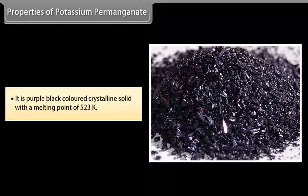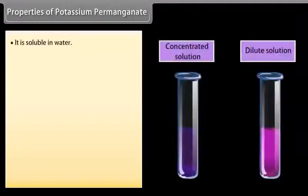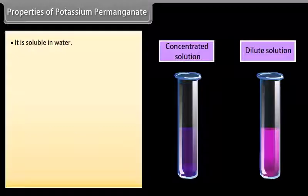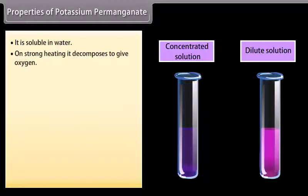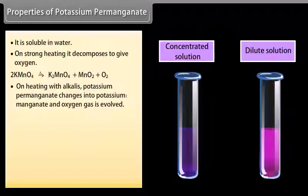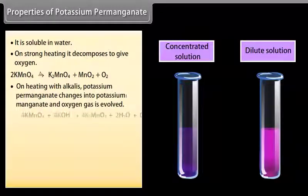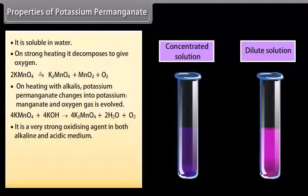Potassium permanganate is a purple-black colored crystalline solid with a melting point of 523 K. It is soluble in water; its aqueous solution has a purple color if concentrated, but pink if dilute. On strong heating, it decomposes to give oxygen. On heating with alkali, potassium permanganate changes into potassium manganate with evolution of oxygen gas. It is a very strong oxidizing agent in both alkaline and acidic medium.